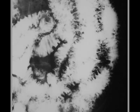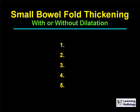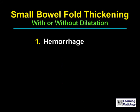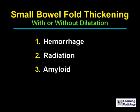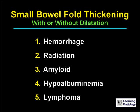The differential is for small bowel fold thickening with or without dilatation. There are five causes: hemorrhage, radiation, amyloid infiltration of the bowel, hypoalbuminemia, and lymphoma.